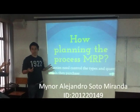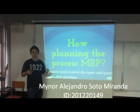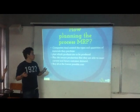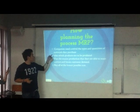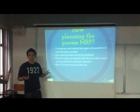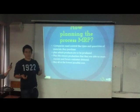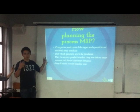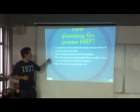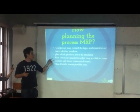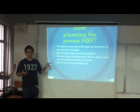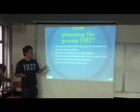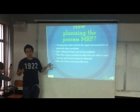How do we plan the MRP1 process? This process needs four important steps. The first step is companies need to control the types and quantities of materials they purchase. The second step is to plan which products are to be produced. The third step is to plan to ensure production is able to meet current and future customer demand. The fourth step is to buy at the lowest possible costs.